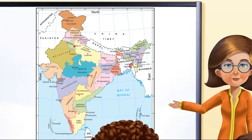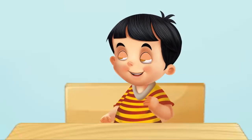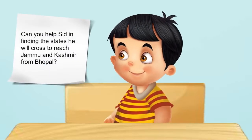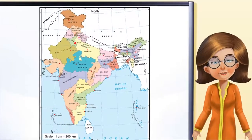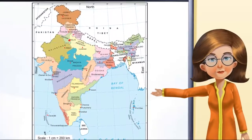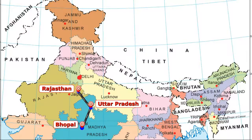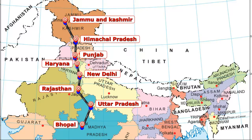Which states will you cross to reach Jammu and Kashmir from our city? Can you help Sid in finding the states he will cross? He will start from Bhopal, cross Uttar Pradesh, Rajasthan, New Delhi, Haryana, Punjab, Himachal Pradesh, and then he will enter the state of Jammu and Kashmir.